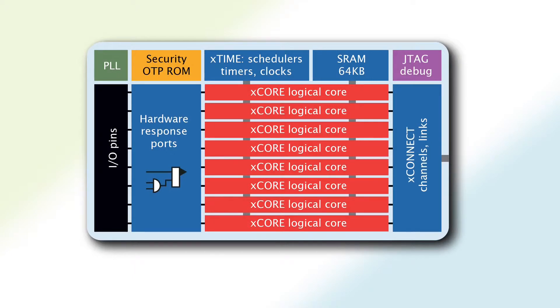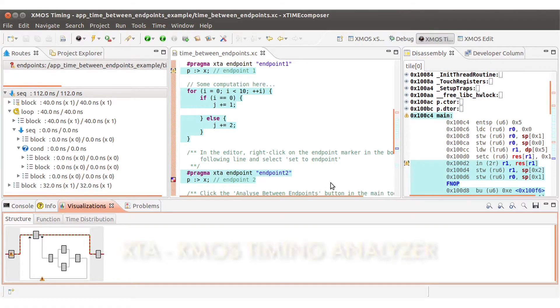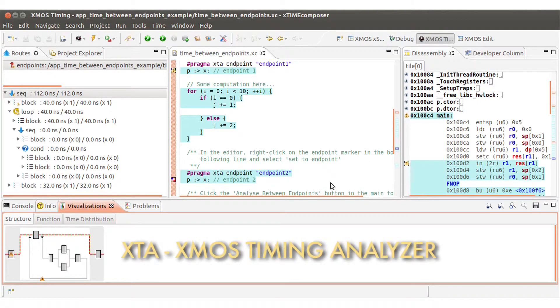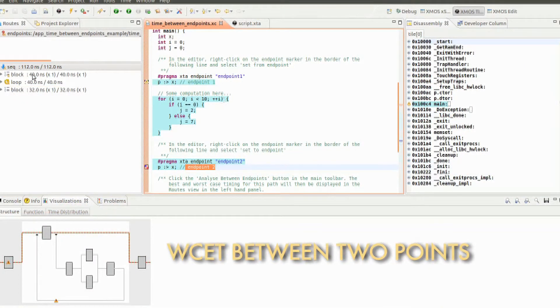However, on the X-Core architecture, we are deterministic, which means that we can know at compile time how long a particular function, a particular instruction, or a particular path between two points will take to execute. We've used this unique feature to create a tool — the XTA, the XMOS Timing Analyzer. Basically, this allows you to tell the worst-case execution time between two points in the program.